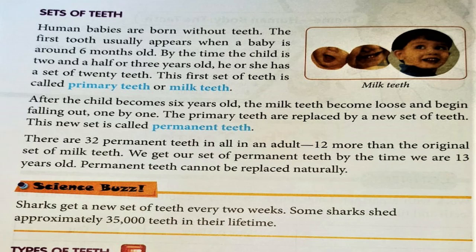These first set of teeth are called milk teeth. They are also called the primary teeth or temporary teeth. Why are they called temporary teeth? Because as the child grows, these teeth fall one by one. That is why the milk teeth are called temporary teeth.